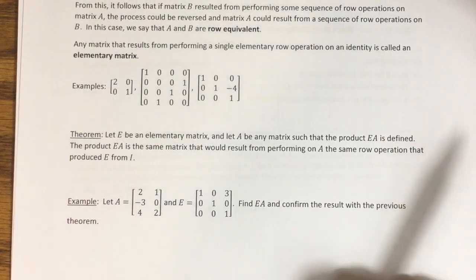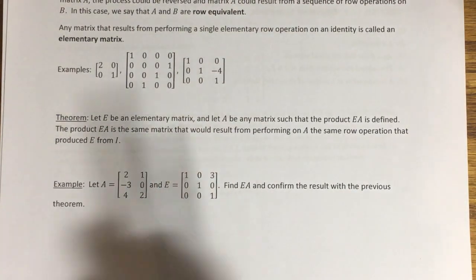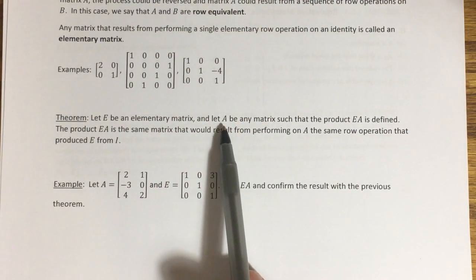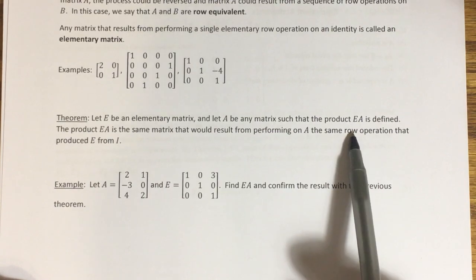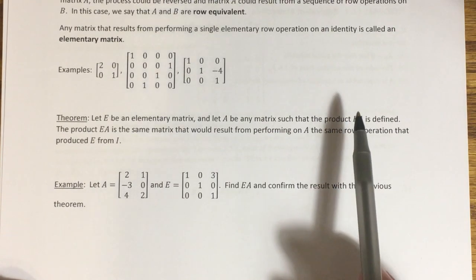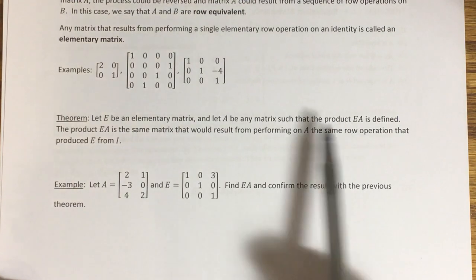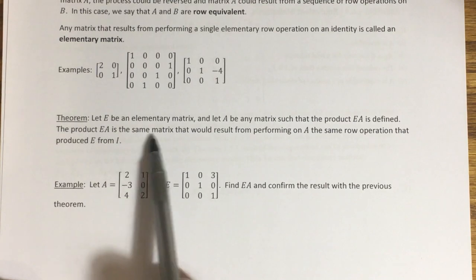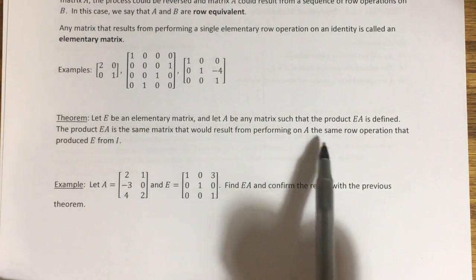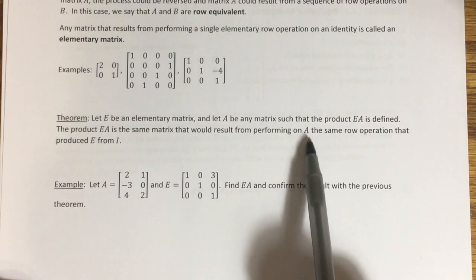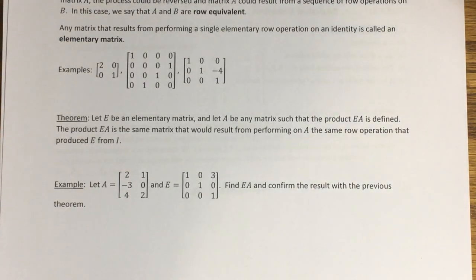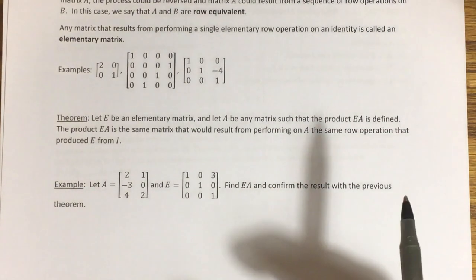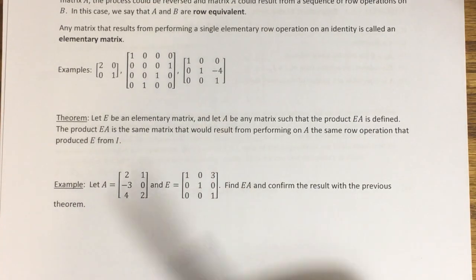This theorem is going to reveal the importance of elementary matrices. If E is an elementary matrix and A is a matrix such that the product E times A is defined — and the order matters, the elementary matrix is on the left — then the product EA is the same matrix you would get from simply performing whatever row operation produced E directly on A. We're not going to prove all three cases as it's lengthy; instead, it's easier to illustrate this with an example.